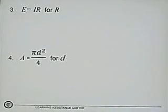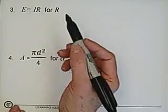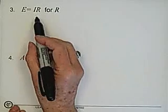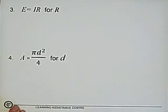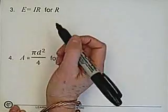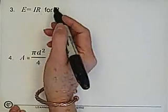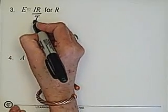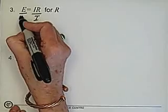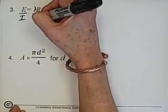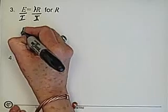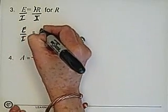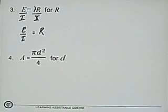Here we have our formula for voltage, current, and resistance, and we're going to solve for resistance. What's happening between current and resistance is they're being multiplied. When you have multiplication you divide, so we divide both sides by I. The two I's cancel and we're left with E over I equals R. There's our equation solved — now we can just plug in voltage and current and solve for R.